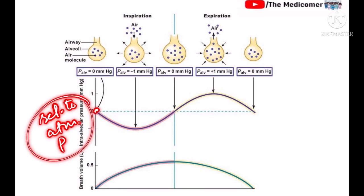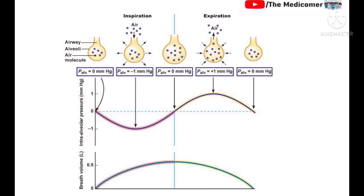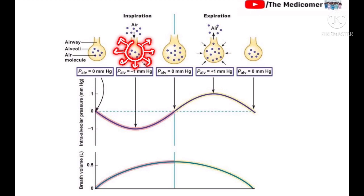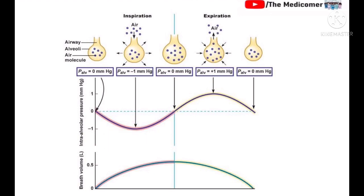During inspiration, the alveolar pressure keeps decreasing. Let's say there are six molecules of air in the alveoli — once inspiration starts, the wall of the alveoli begins to expand. The volume increases but the same six molecules are still present, so pressure decreases. This happens because of Boyle's law: pressure is inversely proportional to volume.